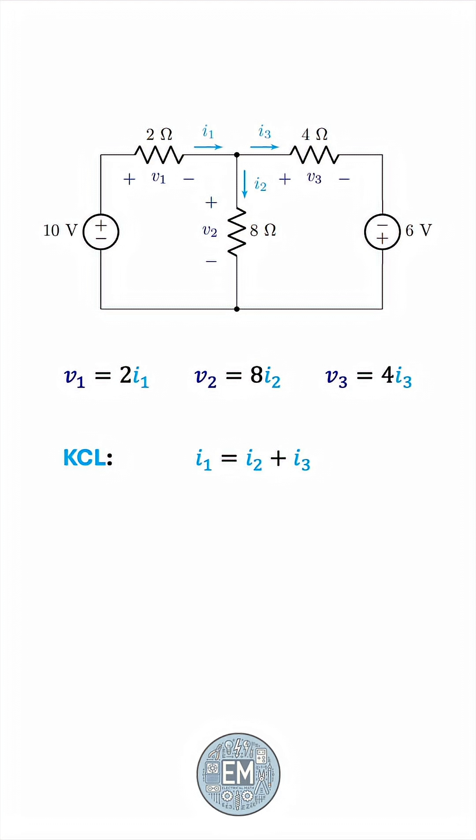Finally, we'll apply KVL. We'll draw a clockwise loop, like this, and this gives us negative 10 plus V1 plus V2 equals 0.